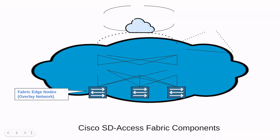This fabric device connects wired endpoints to the SD Fabric. The Fabric Edge Node is part of the overlay network, which is a virtual or tunnel network that virtually interconnects all the network devices, forming a fabric of interconnected devices. Down here you're going to have your computers, your servers, and also your wireless APs.